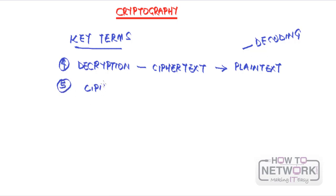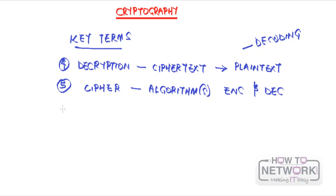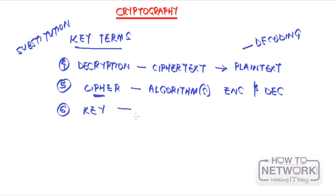The fifth term is cipher. The cipher is the algorithm — or algorithms — used for encryption and decryption. Now the fact is the algorithm, which is your cipher, may not necessarily be secret. Everybody may know what a particular cipher is. For example, a cipher could be substitution, and everyone knows how to substitute. But if they don't know the key, they won't be able to decode your information. So it's the key that actually provides secrecy to your whole cryptographic process.